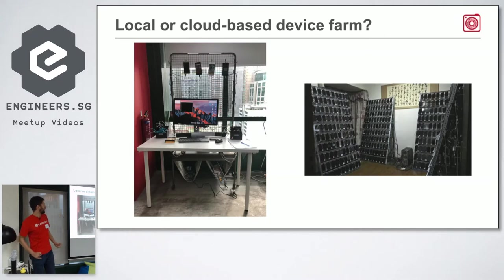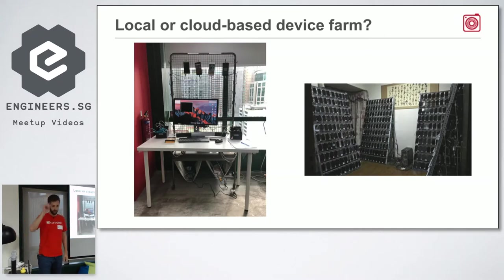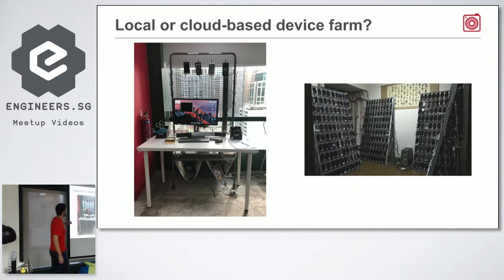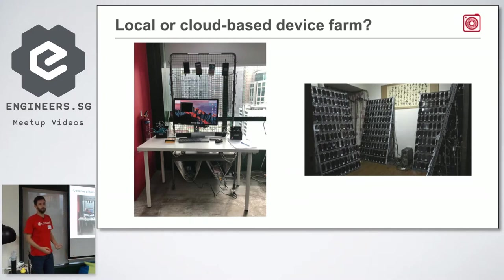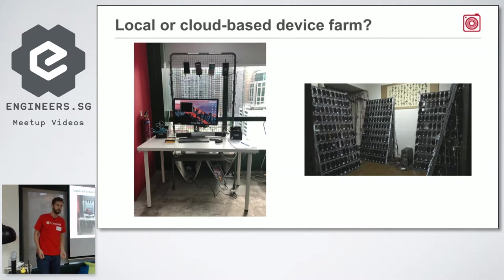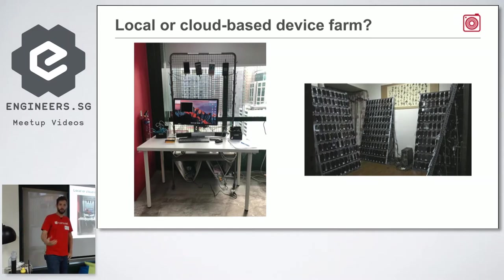The first step was test automation on mobile devices - we're using Appium for that. The solution has been around for a bit over a year. We started very humbly with a couple of phones. This is actually the device farm in our office, three stories upstairs - two iPhones and two Android phones - and we use these four devices to run all our tests.